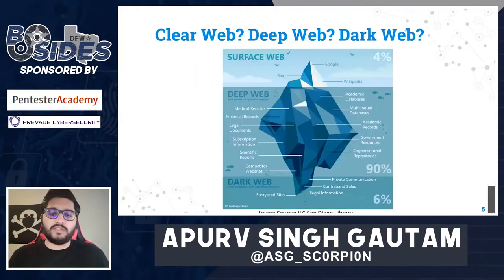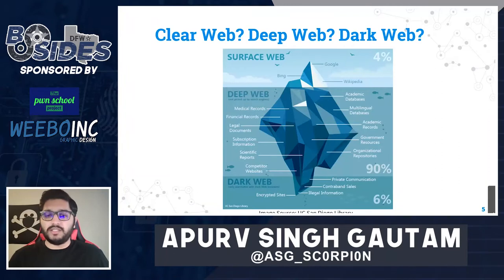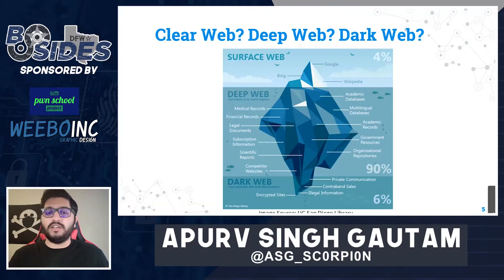Starting with the introduction — there are three parts to the web: the surface web, the deep web, and the dark web. Surface web includes all the sites indexed by search engines like Google, Bing, Yahoo, etc. — sites you can directly search and access. Deep web includes all the sites behind some kind of login system or paywall that you can't directly search on search engines. Examples include your college database where you log in to get your results, or your server IP addresses hosted on Google, Digital Ocean, AWS, etc.